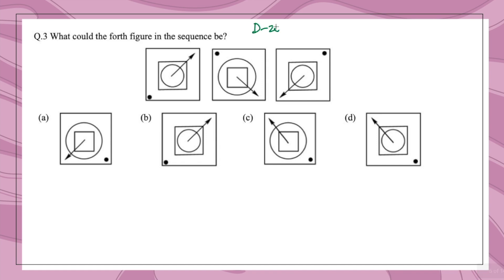This question was asked in the CSIR December 2018 exam. Again, three figures are given and you must find the fourth. Looking at the figures: the outside square is the same in all. Inside, you see a square then a circle, then a circle then a square, then a square then a circle. So a circle-square pattern is alternating. The arrow direction is also changing, and the position of the dot is changing. Using all four observations we'll draw the final figure.